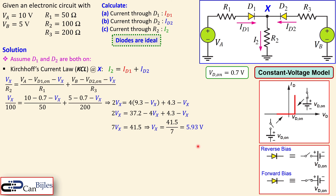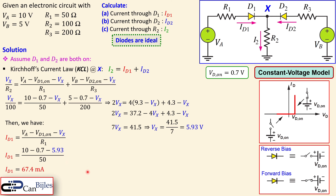VX equals 41.5 over 7, which is 5.93 volts — this is the value under the assumption that D1 and D2 are both on. Now knowing VX, we calculate ID1 using the same expression. Substituting VX = 5.93V, VA, and VD1_on gives ID1 = 67.4 mA, which is greater than zero, so the assumption that D1 is on is correct.